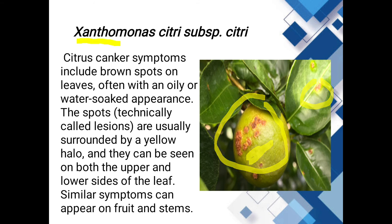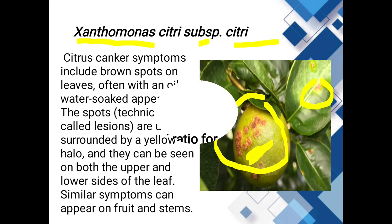The causal organism of citrus canker is Xanthomonas citri subsp. citri. Yellow sticky traps are used for the control of which pest? Options: thrips, jassids, whiteflies. The answer is whiteflies — they are attracted to the color yellow.